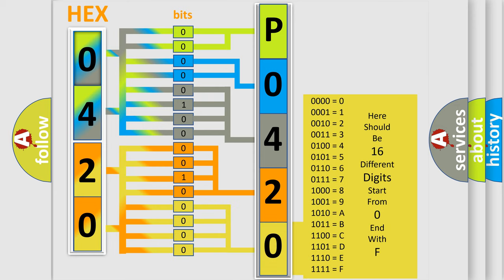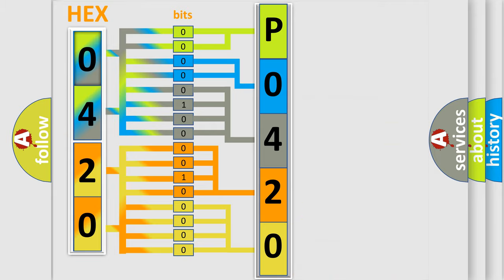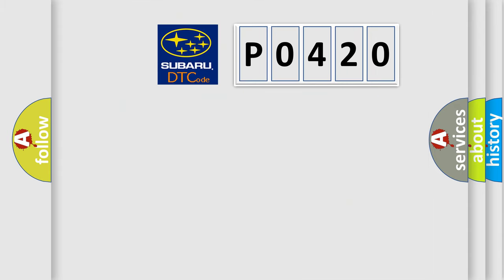We now know in what way the diagnostic tool translates the received information into a more comprehensible format. The number itself does not make sense to us if we cannot assign information about what it actually expresses. So, what does the diagnostic trouble code P0420 interpret specifically for Subaru car manufacturers?